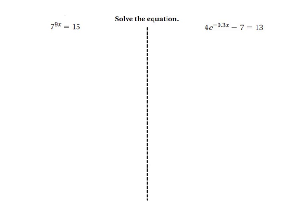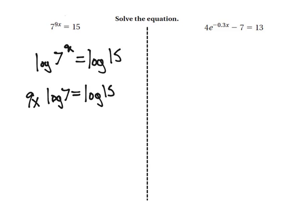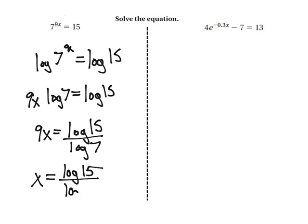Same thing here. So we go log of 7 to the 9x equals log 15. Bringing our 9x forward, divide by log 7. Then you're going to end up dividing all of that by 9. Type that into your calculator and you'll get an approximation of 0.155.